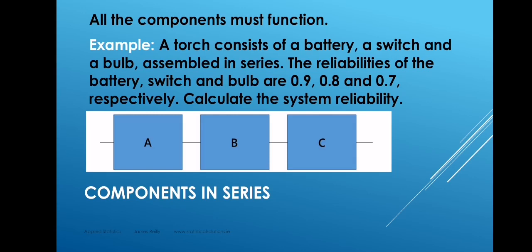In this example, we say that a torch consists of a battery and a switch and a bulb, and all of these components must operate or else the torch will not function. So we say that they are assembled in series. We represent them in a diagram one after the other, so that it's like making a journey. We must go through each gate or we cannot make the journey if one gate is blocked. We've given reliabilities to these components of 0.9, 0.8, and 0.7. These are not realistic real-life values, they're too low for that, but we're using these simple numbers here for the sake of illustration.